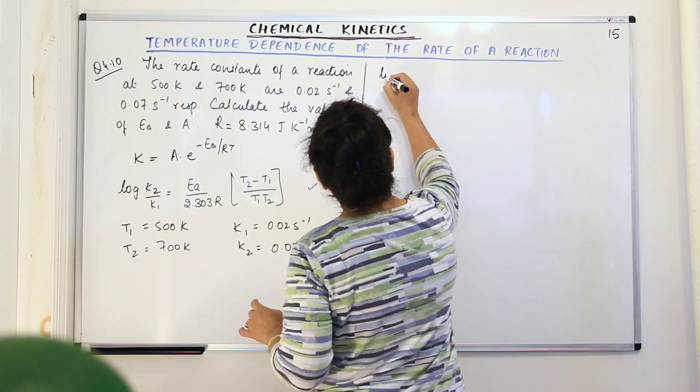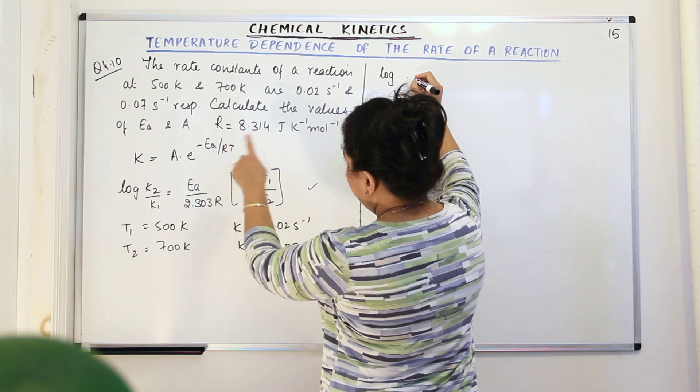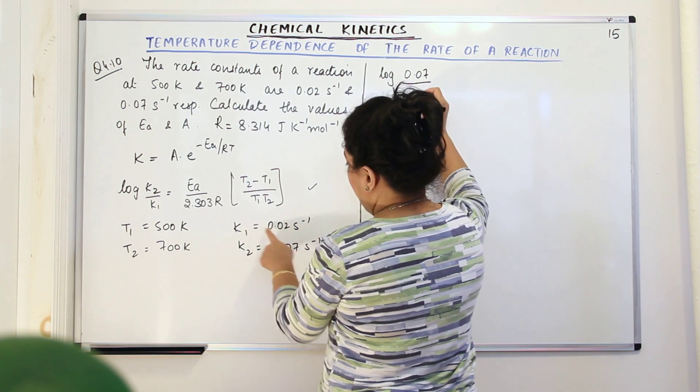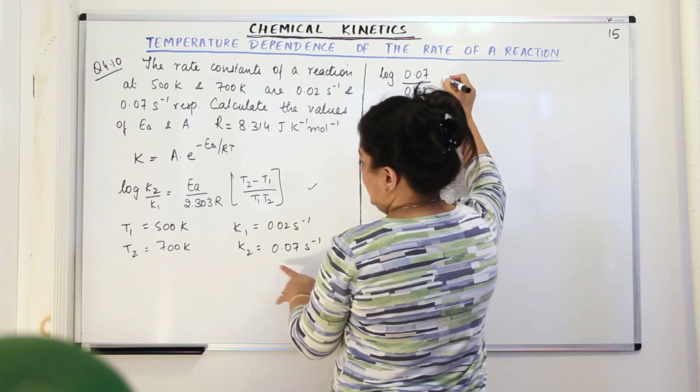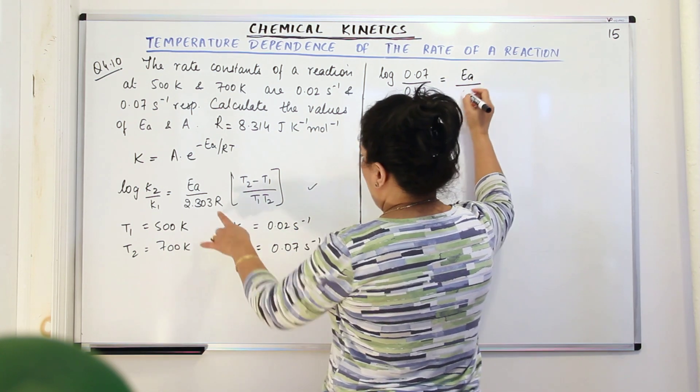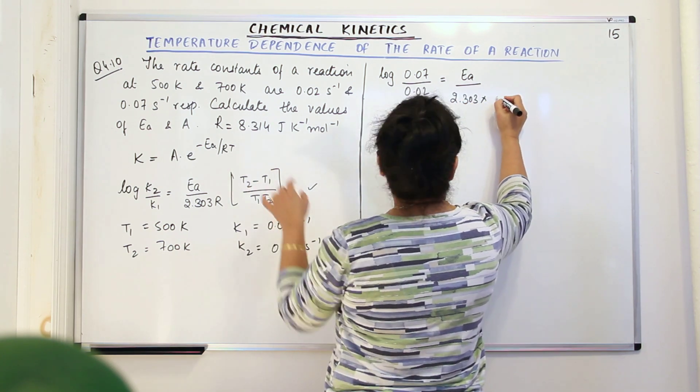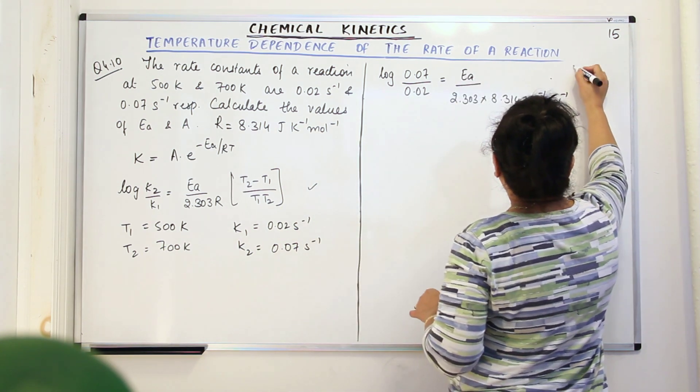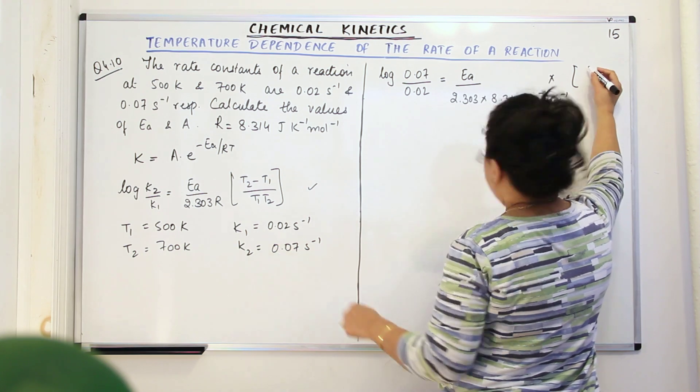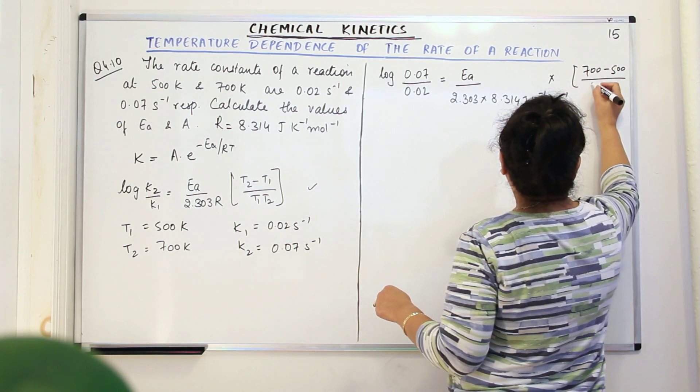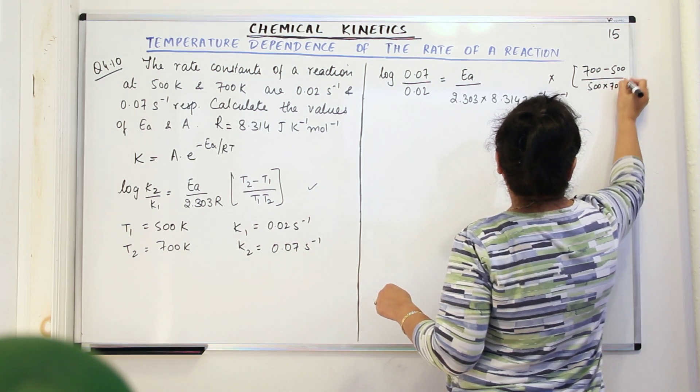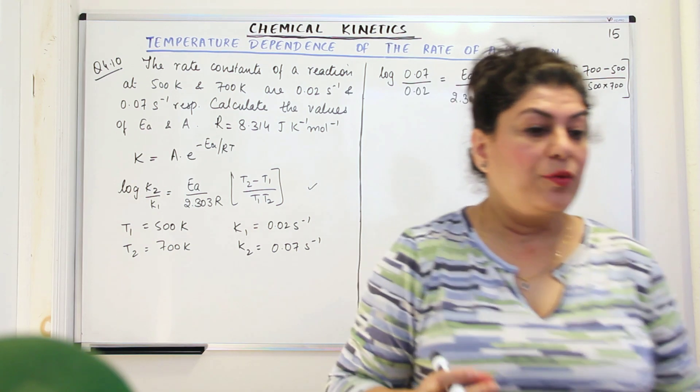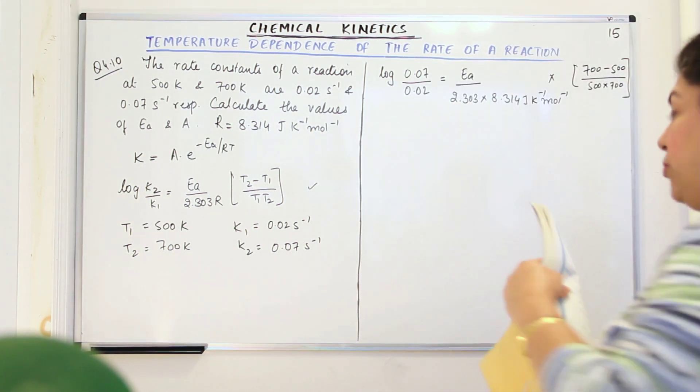Now, having this information and the value of R, let us find out log K2. What is K2? K2 is 0.07 upon K1 is 0.02, the units will be cancelled, is equal to Ea upon 2.303 into R is 8.314 Joule per Kelvin per mole into T2. So T2 is 700 minus 500 upon 500 into 700. Now when you get all of this, when you calculate log 0.07 upon 0.02, you get the value.